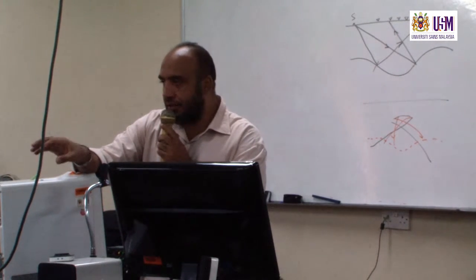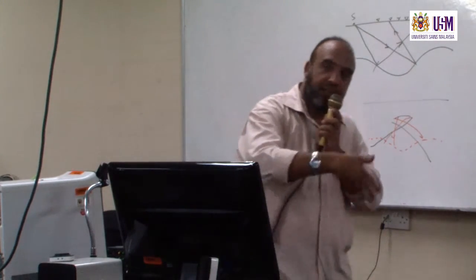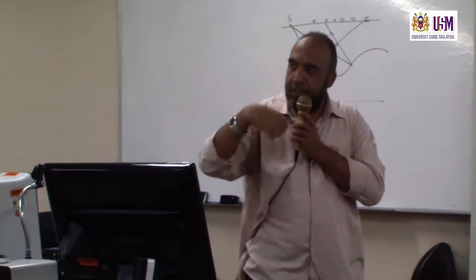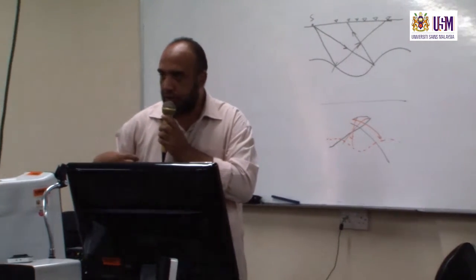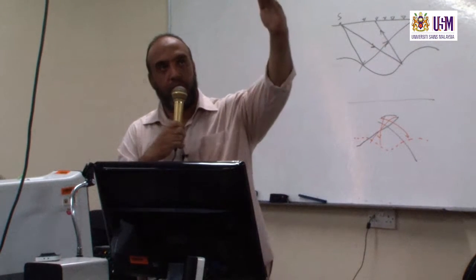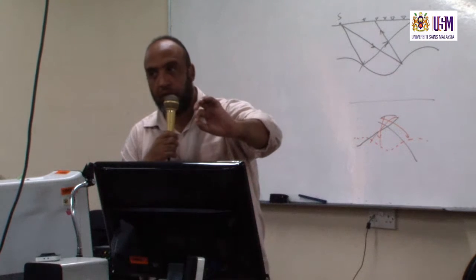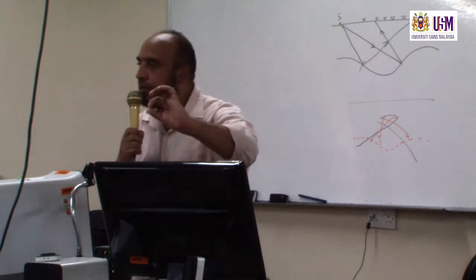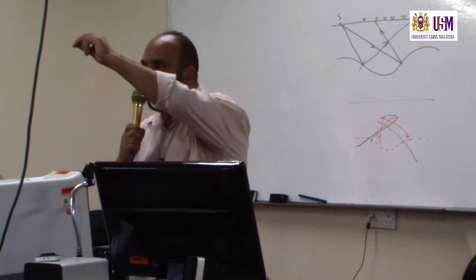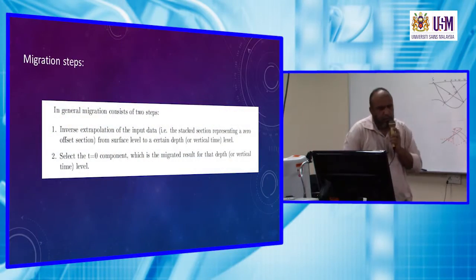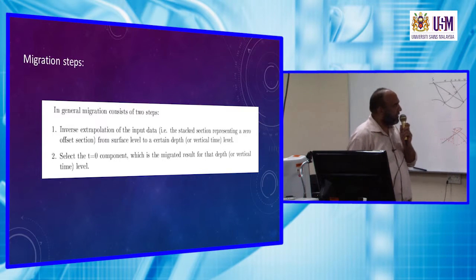The exploding reflector means we are firing or shooting from all points discretizing this reflector. Like in a fiction movie where you can run time in reverse, the idea is that you inverse extrapolate the energy from the surface until you return at time zero, where the point at time zero will be at the reflector itself. A successful application will return points at the reflector at their proper location. The second step is to select the T equals zero component, which is the migrated result for that depth or vertical time level.